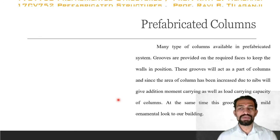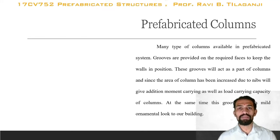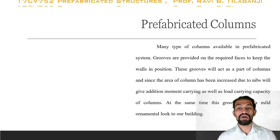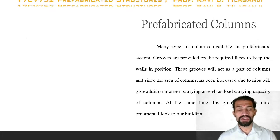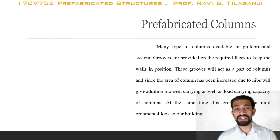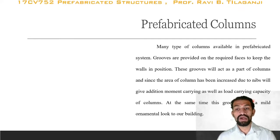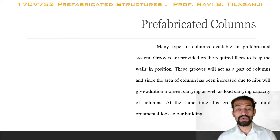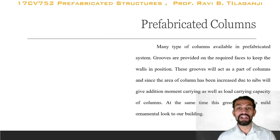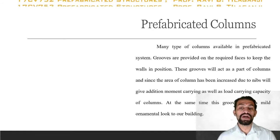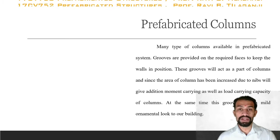There are many types of columns available in a prefabricated system. Grooves are provided on the required faces to keep the walls in position. These grooves act as part of the column, and since the area of the column has been increased due to nibs, they provide additional moment-carrying capacity and extra load-carrying capacity.